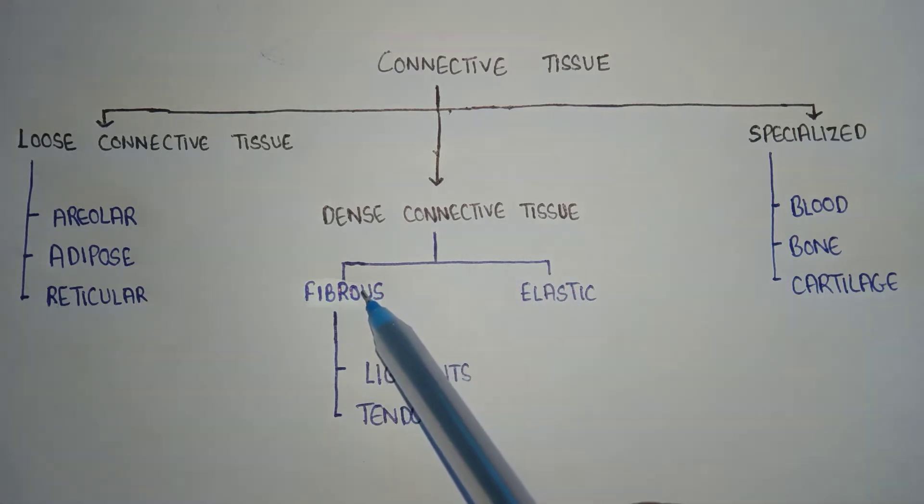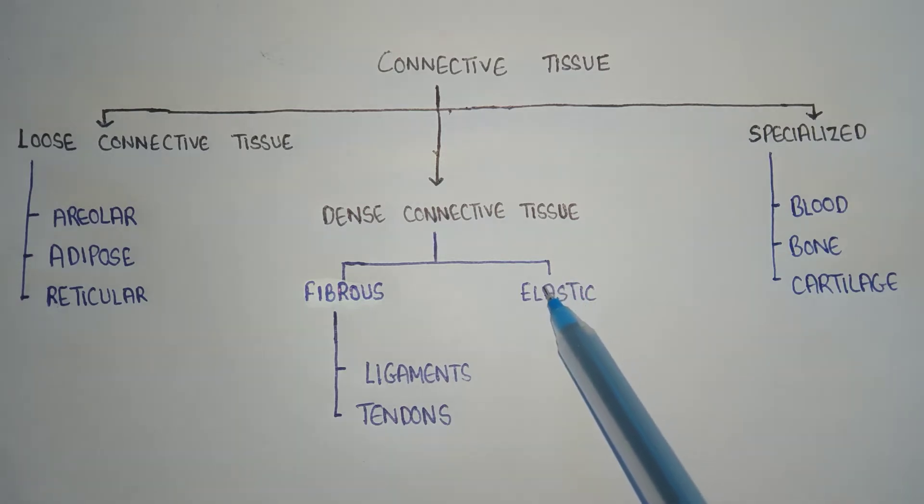In fibrous tissue, there are collagen fiber with fibrosite cells, and in elastic tissue, there are elastic fibers. Fibrous tissue has examples the ligaments and tendons. Ligaments are the tissue which connect bone to bone, whereas tendons are the tissue which connect bone with muscles.